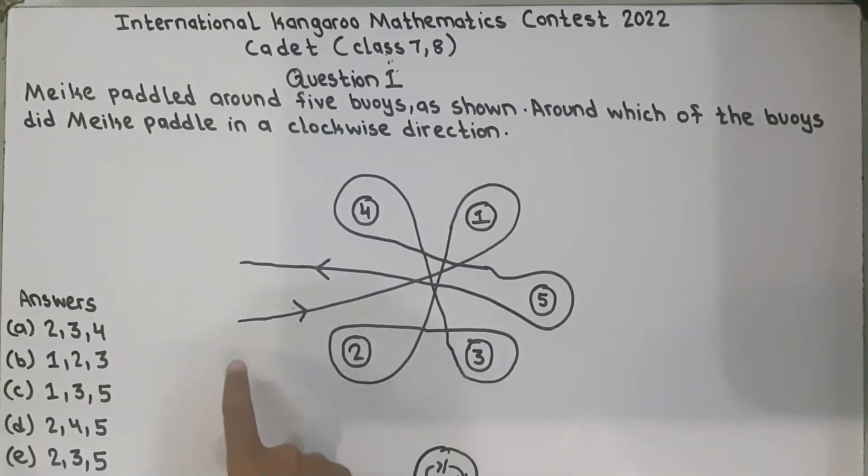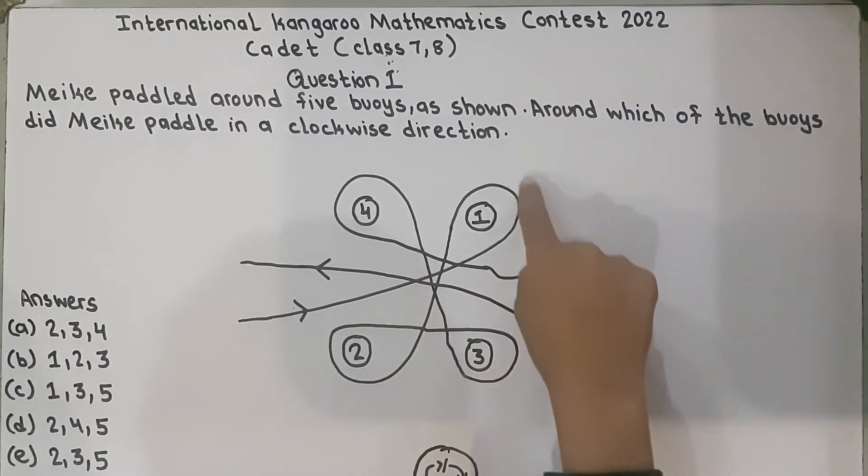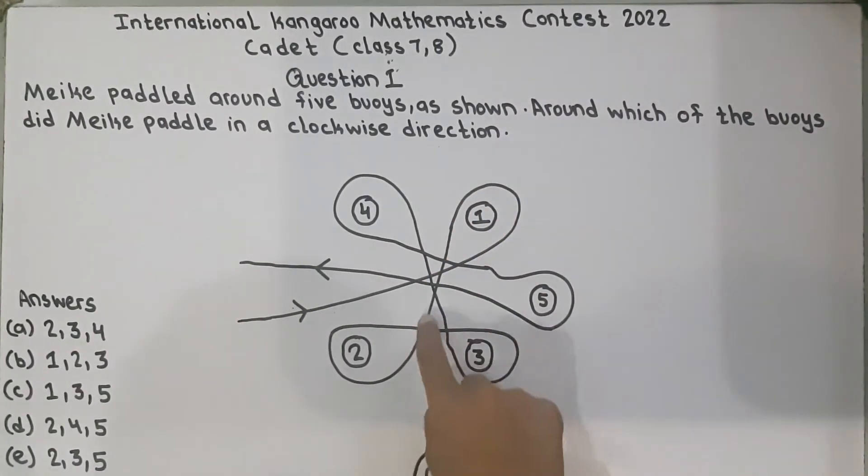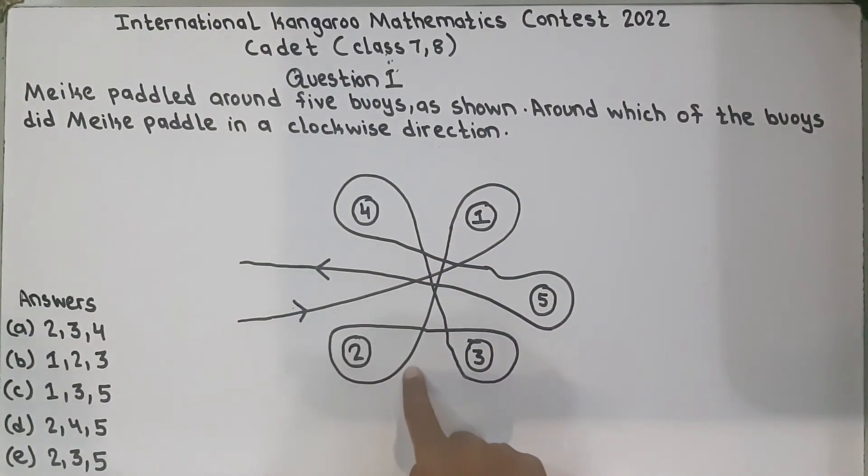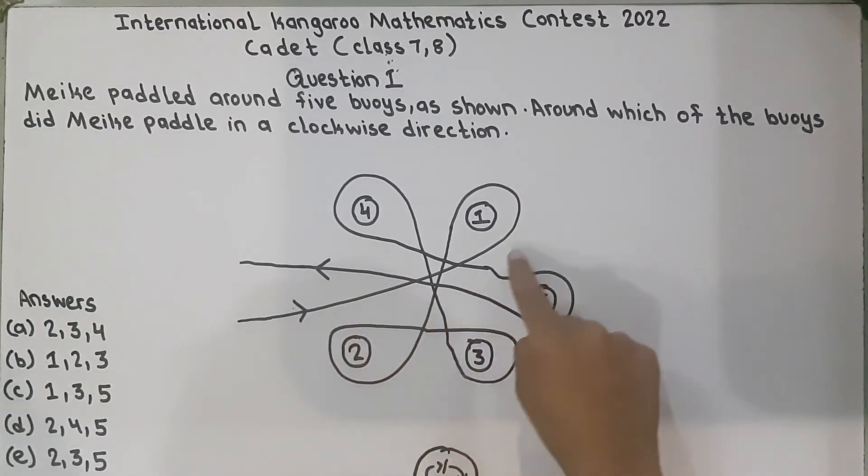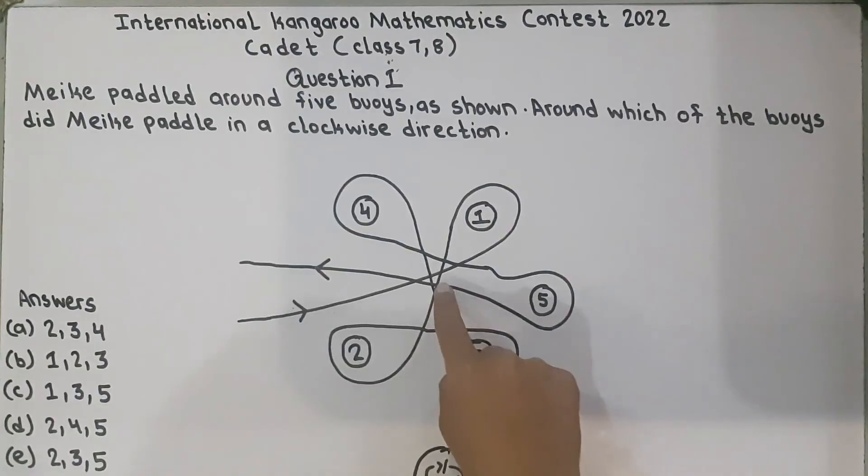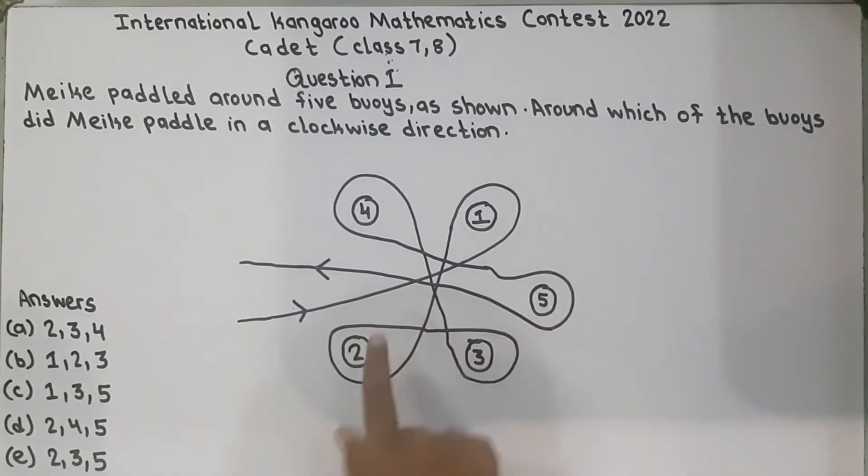Now if he entered here, if you follow this line, this line goes here and it comes here. He paddled around the number 1 but not in a clockwise direction. It is in an anti-clockwise direction. So when he came on 2, he went like clockwise and on 3, this line goes there and on 3, he also went like clockwise.